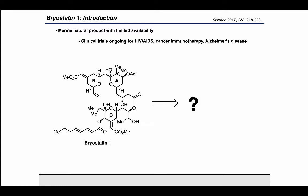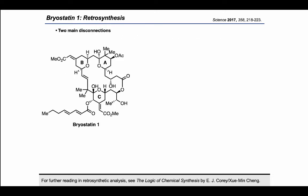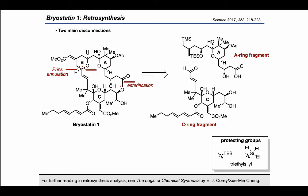The question of how to synthetically access Bryostatin-1 has many potential answers, but in this paper the authors present a very elegant solution. With the aim of making the synthesis as convergent as possible, the authors suggested disconnecting once on the left-hand side and once on the right-hand side — using a Prins annulation on the left and an esterification on the right — to arrive at an A-ring fragment and a C-ring fragment, which could be united to give the final target.